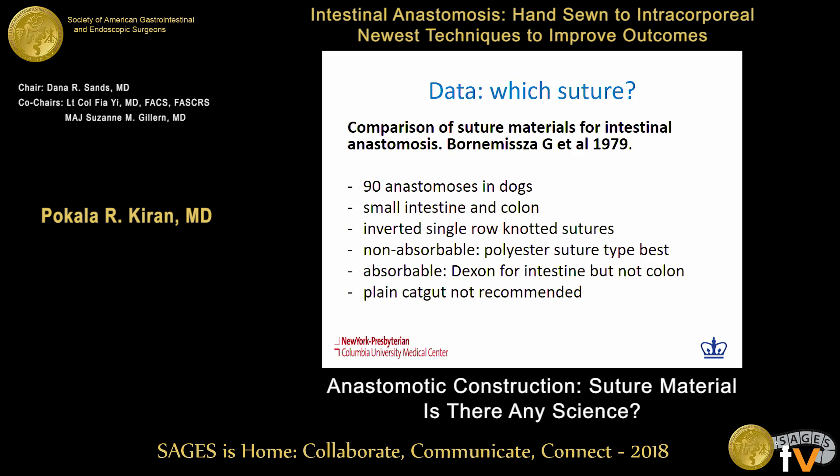Going to the data, there is actually not a whole lot of data in the literature supporting each of these principles — most are surgical axioms and common-sense guidelines. An elegant study was performed in dogs in the late 1970s with 90 anastomoses tested in small intestine and colon. Single-row sutures were placed and different suture materials were tested for anastomotic leak rates and bursting pressures. The authors concluded that non-absorbable polyester sutures were probably better, and that Dexon degraded preferentially in the colon.